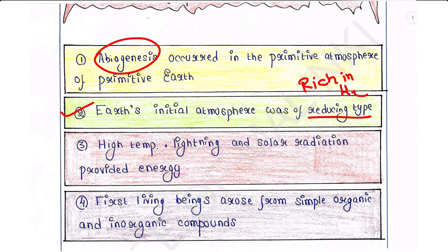High temperature, lightning, and solar radiation provided energy required for chemical reactions. First living beings arose from simple organic and inorganic compounds like CO2, H2, and NH3. These were the simple inorganic and organic compounds, and first living beings arose from them.